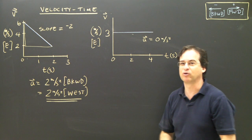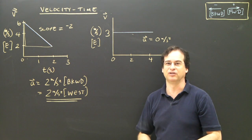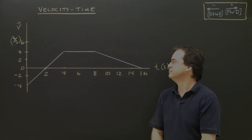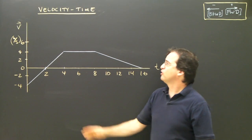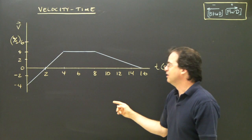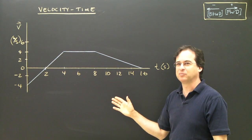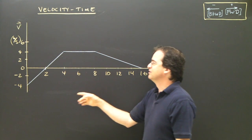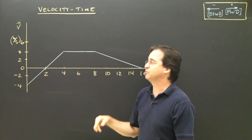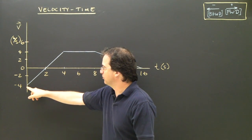Let's do one more graph, which is a little more complicated, and then I think we've done enough of velocity-time graphs as far as slopes go. We're going to look at this VT graph — a velocity-time graph — but I'm not going to use exact numbers all the time. Let's take a look and describe what the object is doing.